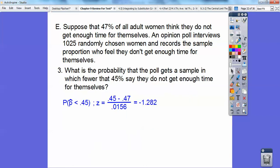And then what is the probability that the poll gets a sample in which fewer than 45% say they do not get enough time for themselves? So they want to know what the probability that the proportion is less than 45%. So we just go ahead and plug it in. 45 minus 47 divided by the standard deviation that we got right there, and you get that. So that's my z score. I'm going to look up the z score. Less than means shaded to the left, so that's what the table is. I want to see your bell-shaped curve on that. And so that's the answer right there because it just said less than.